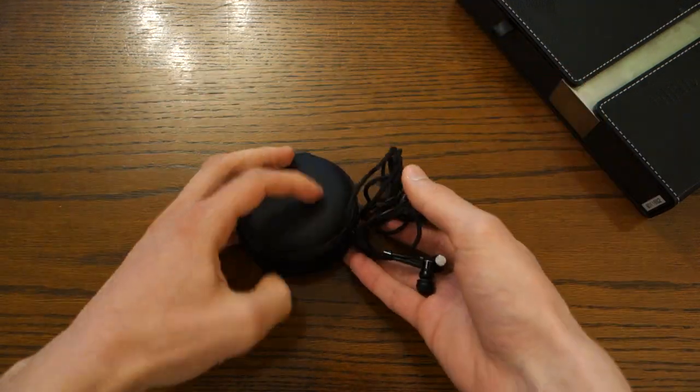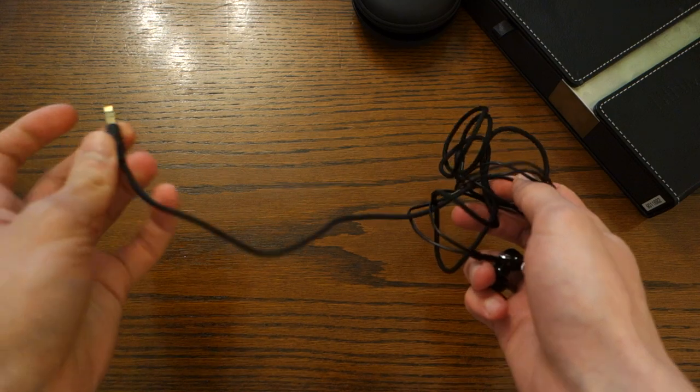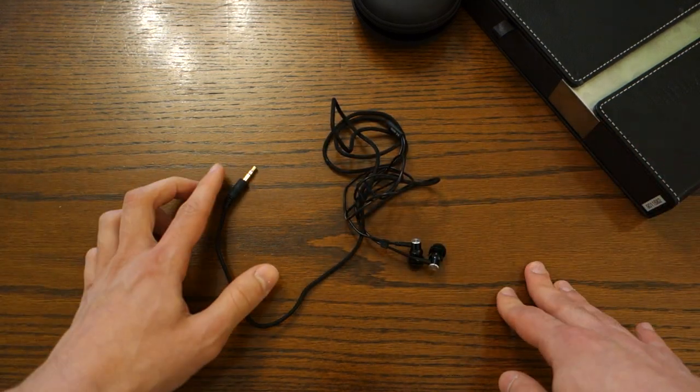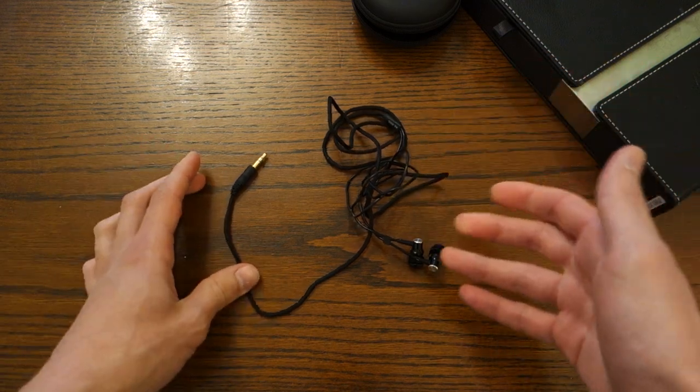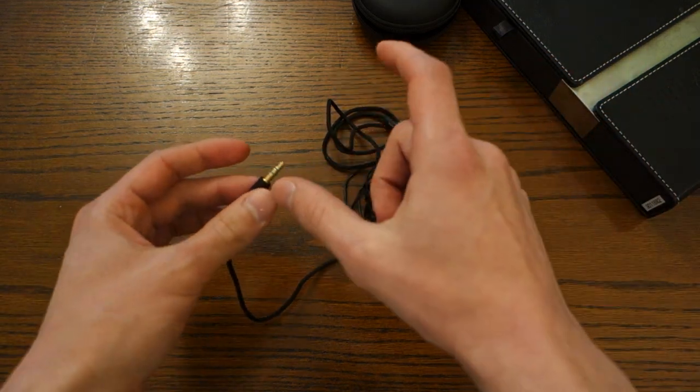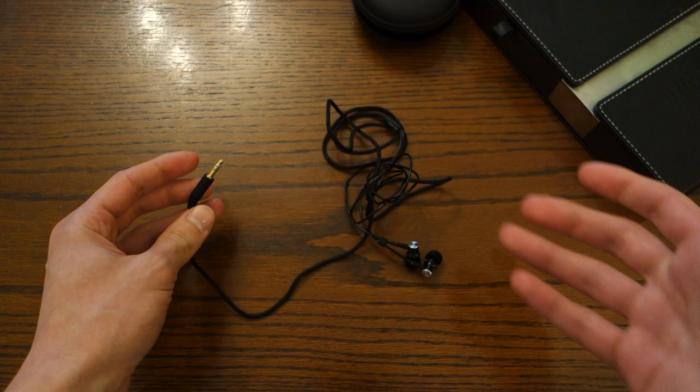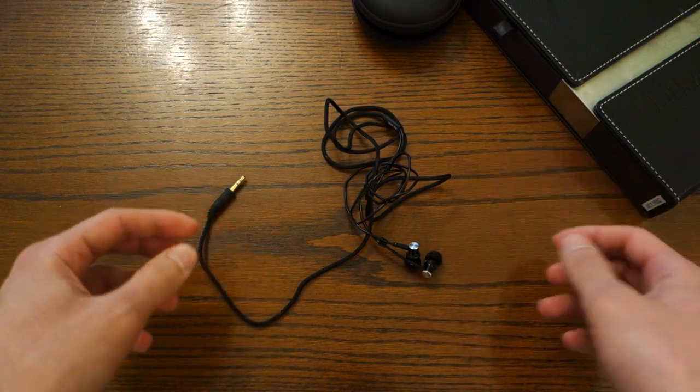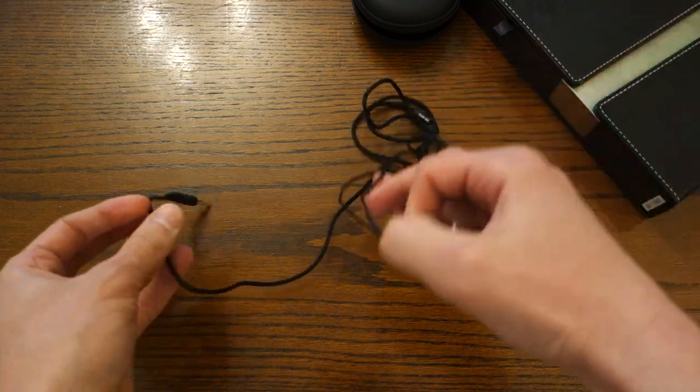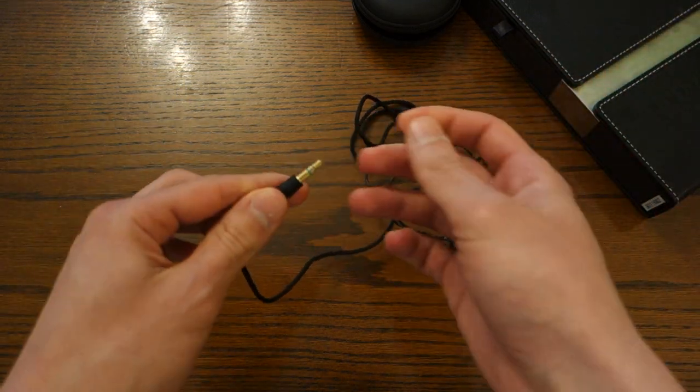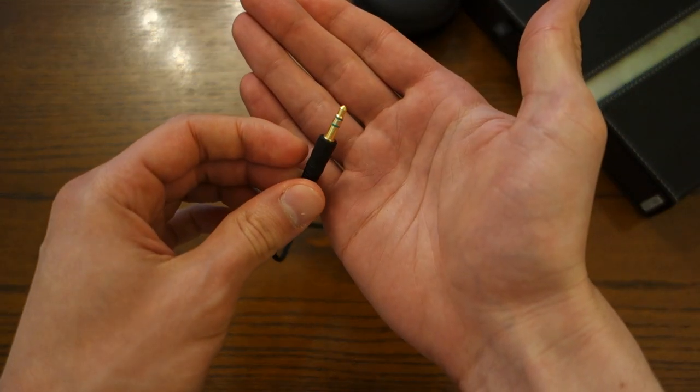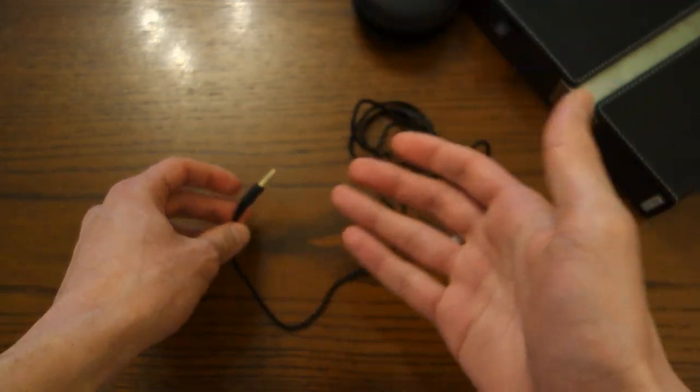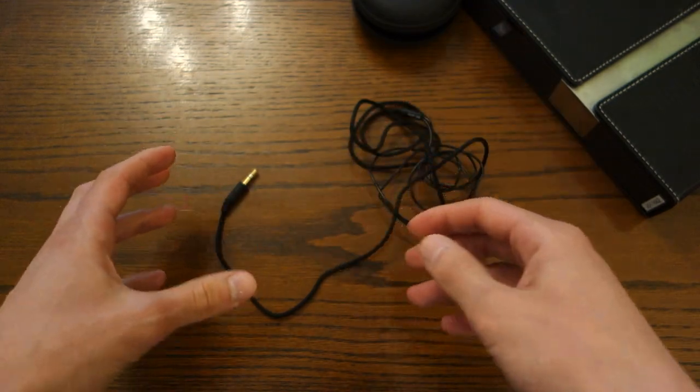Now in terms of the earphones themselves they're terminated by a straight 3.5 millimeter jack. At the time in 2015 I wasn't sure as to why HiFiMan had chose to do a double termination to add like a little extender and that's because the original RE600 were a balanced option whereas the 600S are not balanced, they're just a regular 3.5mm jack with a two pole connector and therefore is mainly used to be plugged straight into your smartphone rather than a balanced output.